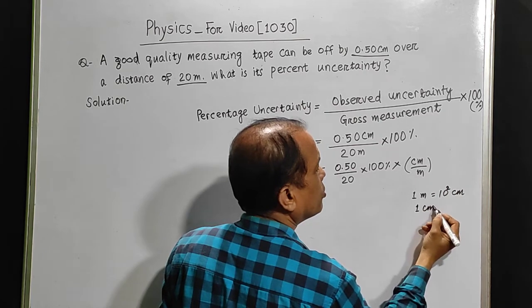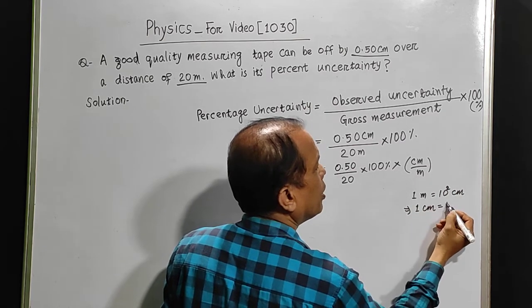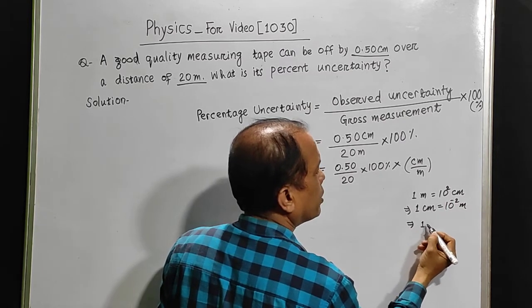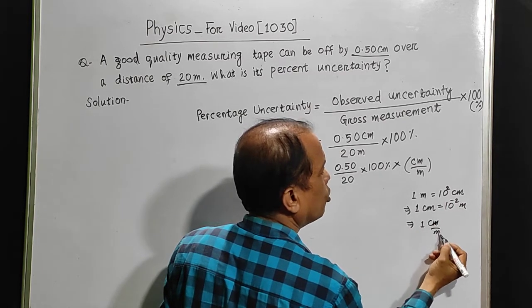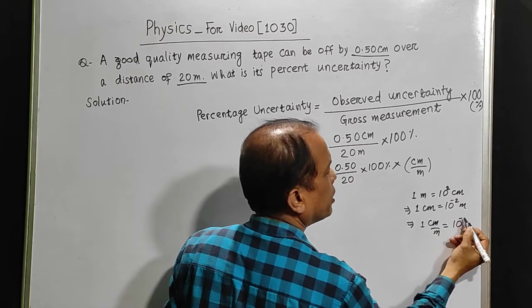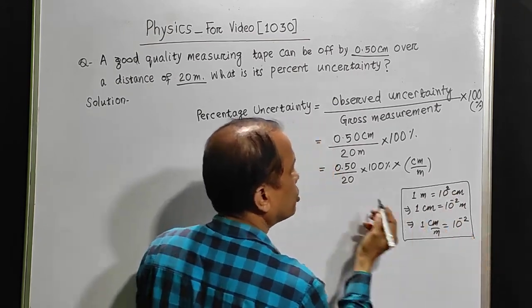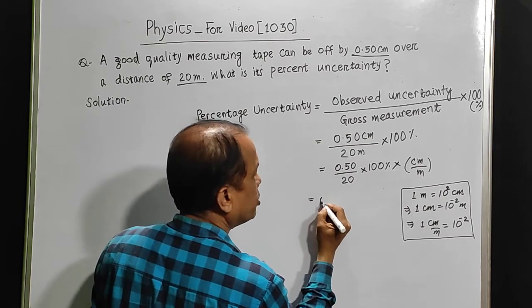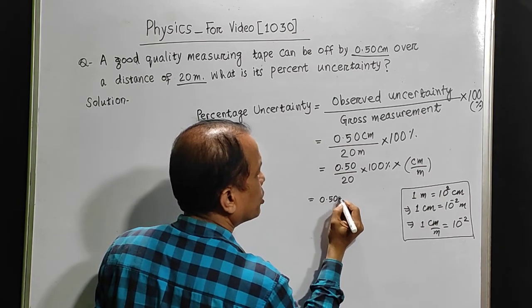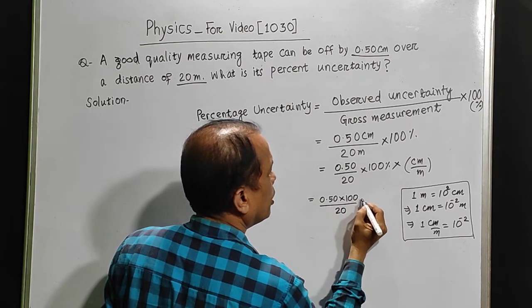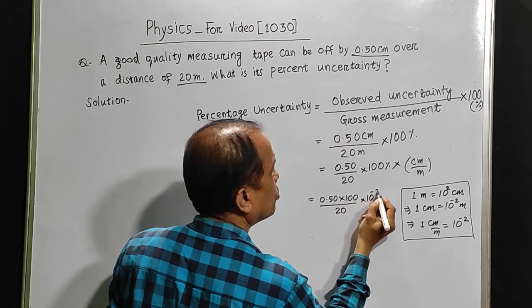One centimeter is 10 to the minus 2 meters. That means one centimeter upon meter would be just a prefix 10 to the minus 2. We can use this prefix here. So this will be 0.50 into 100 upon 20 into 10 to the minus 2 percent.